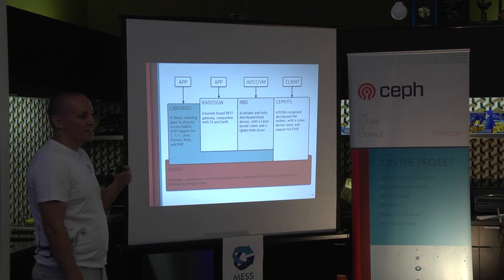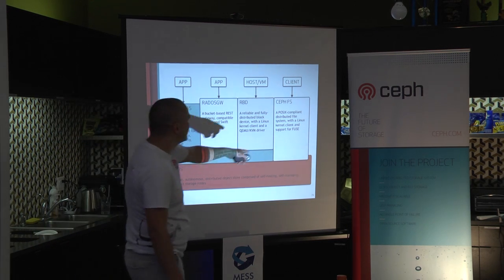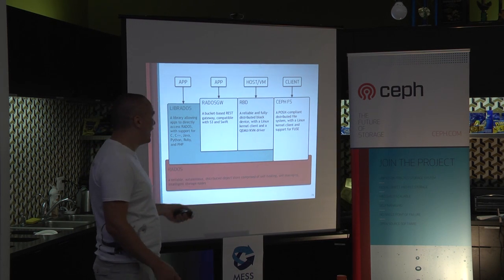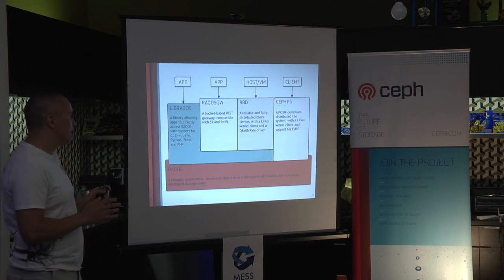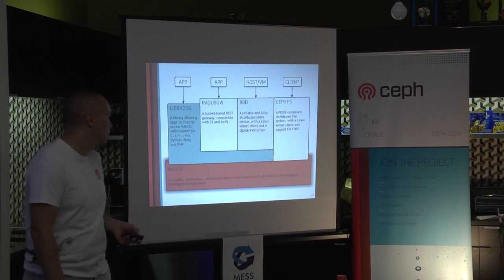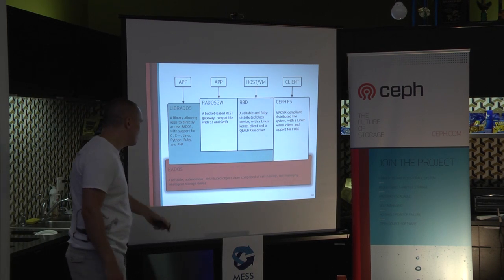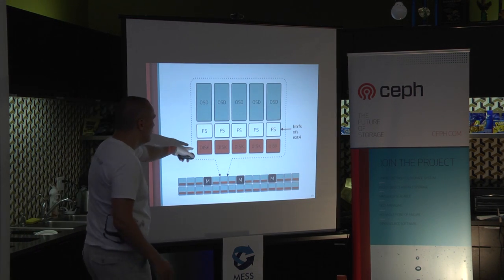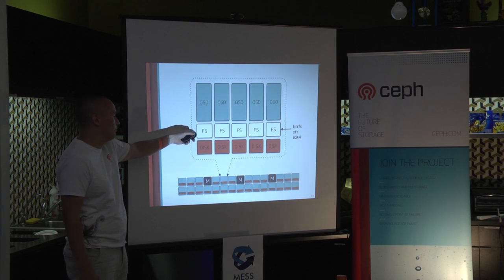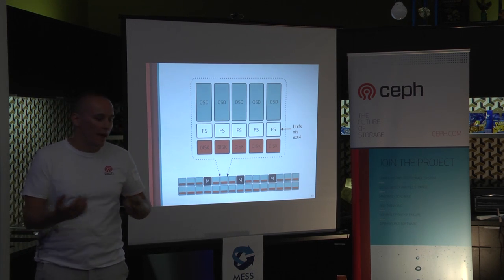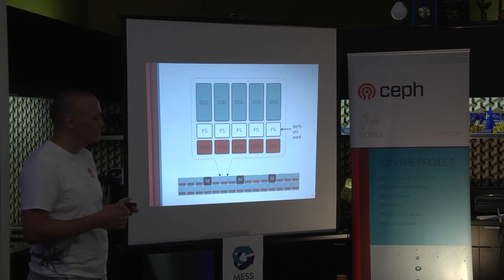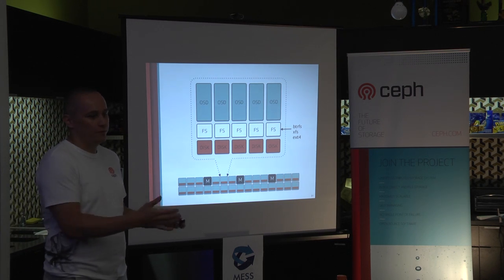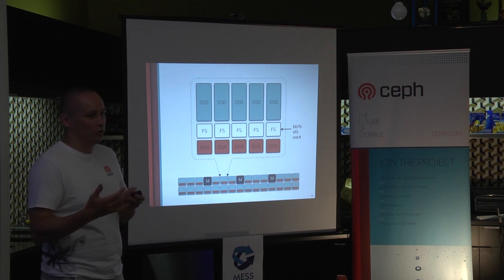Ceph is a bunch of different things. Underneath everything, there's RADOS — a Reliable Autonomous Distributed Object Store. You have a bunch of disks, traditional filesystems on top of that, and a daemon process that serves content of the disk for read and write. The things stored on disk are objects, not blocks — they can be of different lengths, they can have key-value storage in them. There's all kinds of smarts in there; you can have operations you can call on the data.